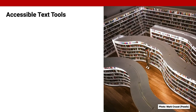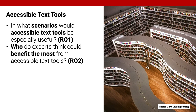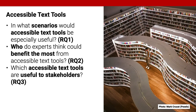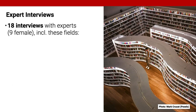In this paper, we operationalize the term accessible text tool as any socio-technical intervention that can make text more accessible. With the first research question, we explore in which scenarios accessible text tools are needed. Following the principles of universal design and design for all, our vision is to develop tools that make text accessible. Since we also want to do user-centered design, the second research question examines who could benefit the most from accessible text tools. The third question provides insights into which accessible text tools are useful to which stakeholders. With the fourth question, we also examine what the interface of accessible text tools should look like.